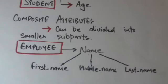Composite attributes are those attributes which can be divided into smaller subparts. For example, name attribute of employee entity can be subdivided into first name, middle name, and last name.